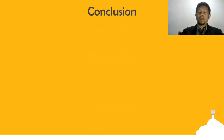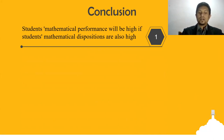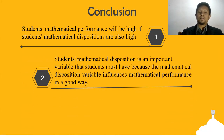Conclusion. First: student mathematical performance will be high if student mathematical disposition is also high. Second: mathematical disposition is an important variable that students must develop, because the mathematical disposition variable positively influences mathematical performance.